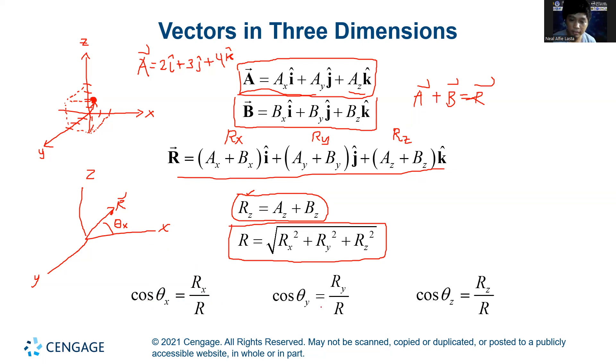And now, if you want to get the angle that your resultant makes with the y-axis, then use the formula cosine theta y is ry over r. And if you want to calculate how many degrees your resultant makes with the z-axis, then you just use the formula cosine theta z is equal to rz over r. These are actually known as the direction cosines.